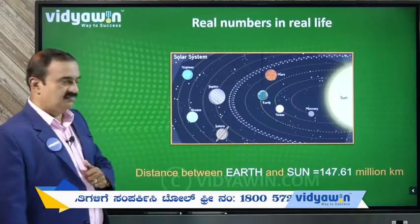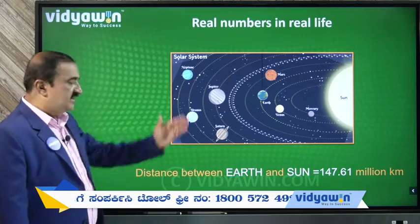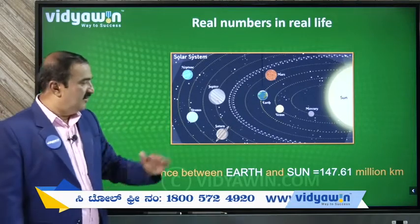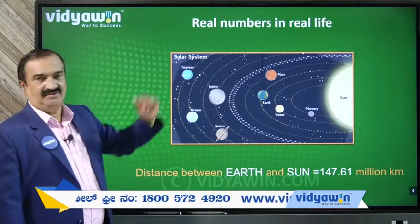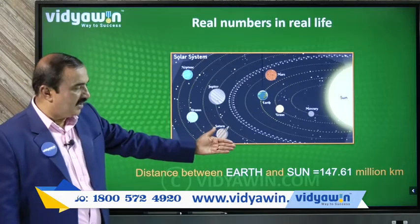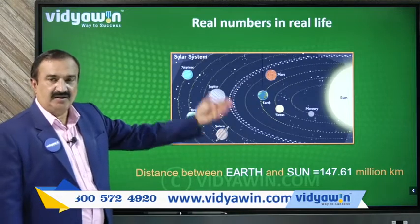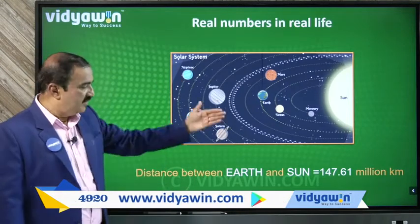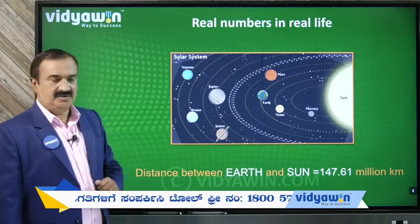In this solar system, the distance between the Earth and the Sun can also be represented with the help of large numbers, with the help of a particular set of numbers.